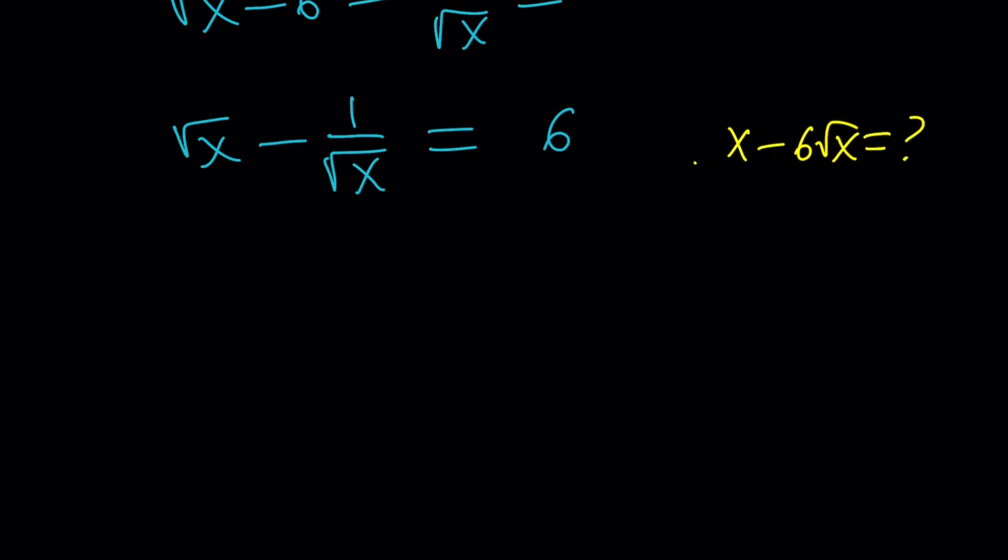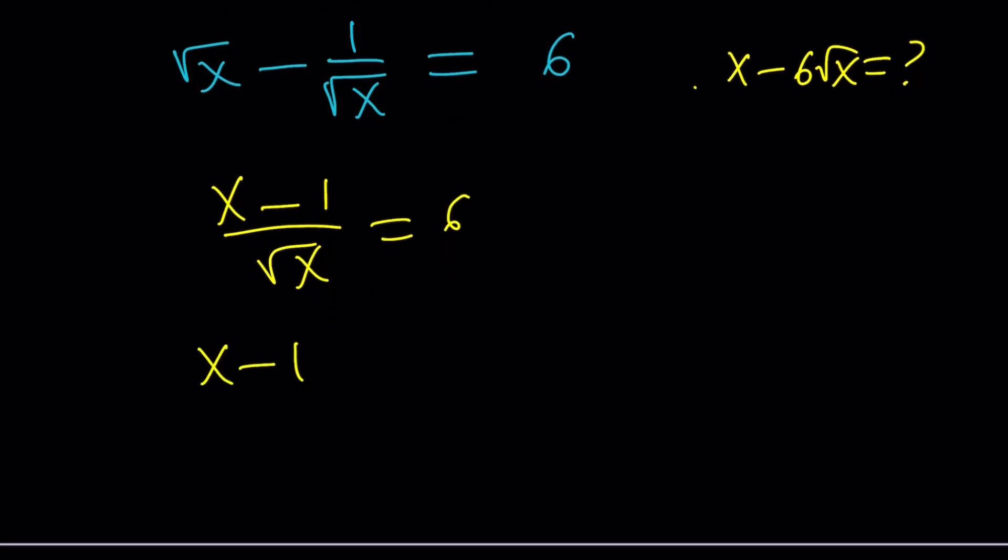But how am I going to find it here? From here, how am I going to find it? Let's make a common denominator and see what happens. x minus 1 over square root of x is equal to 6. And then you can just cross multiply. x minus 1 is equal to 6 square root of x. 6 square root of x. And then subtracting 6 square root of x from both sides and adding 1 is going to give you the answer. Which is kind of interesting, I think, right?